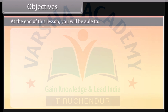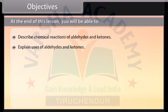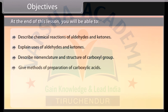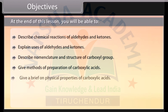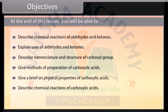At the end of this lesson, you will be able to: describe chemical reactions of aldehydes and ketones; explain uses of aldehydes and ketones; describe nomenclature and structure of carboxyl group; give methods of preparation of carboxylic acids; give a brief on physical properties of carboxylic acids; describe chemical reactions of carboxylic acids; and mention uses of carboxylic acids.